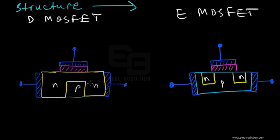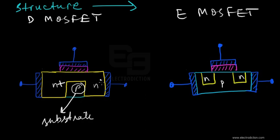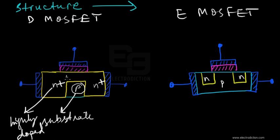In the case of the D-MOSFET, there is a p-type substrate — this is basically the substrate material. There are two highly doped n-type regions on two sides of this substrate material. These two highly doped n-type regions are connected together by means of a conducting channel in between.